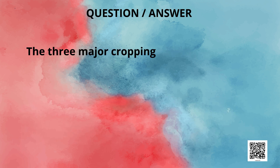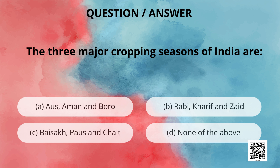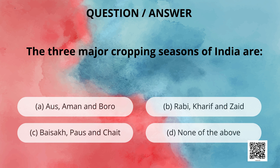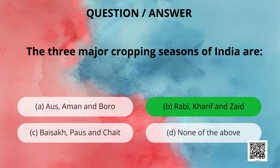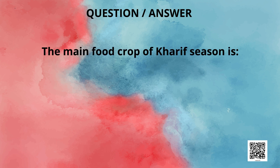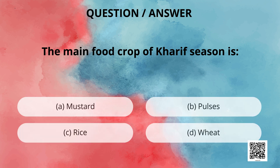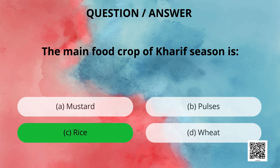The three major cropping seasons of India are: Aus, Aman and Boro; Rabi, Kharif and Zaid; Baisakh, Paus and Chait; or none of the above? Yes, the three major cropping seasons of India are Rabi, Kharif and Zaid. Next question: the main food crop of the Kharif season is mustard, pulses, rice or wheat? Rice it is — option C.